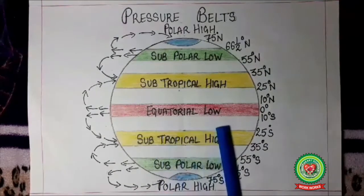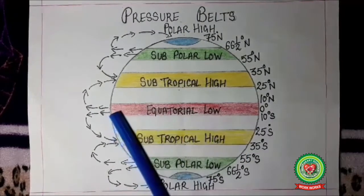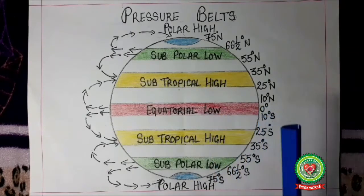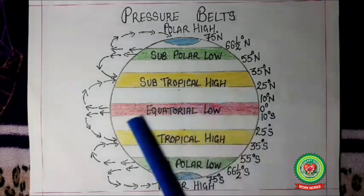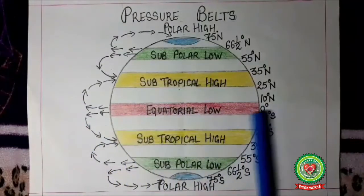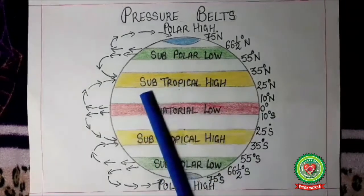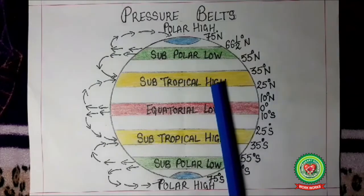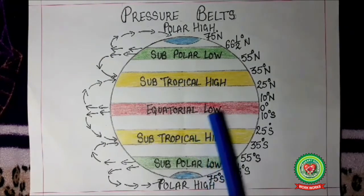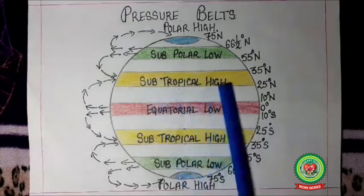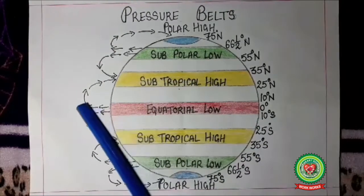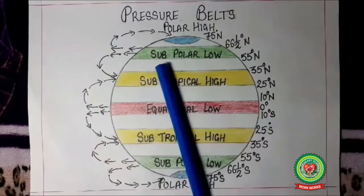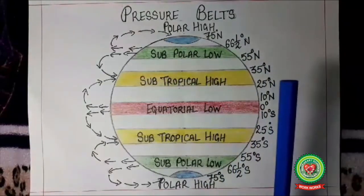The equatorial low pressure belt is created due to two reasons: first, high temperature causes the air along the equator to heat up and rise in the form of convection currents, creating low pressure; second, centrifugal force due to earth's rotation throws air out from the equator, creating low pressure. The subtropical high pressure belt receives slanting rays of the sun, so temperature is lower than at the equator — the air is cool and denser, creating high pressure. Also, the air thrown out from the equator rises, cools down, and sinks in the subtropical belt in both hemispheres, creating high pressure there.